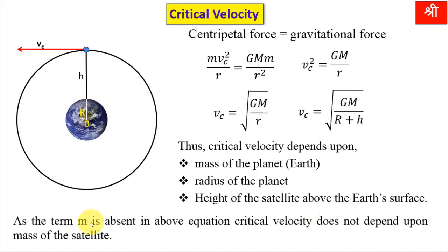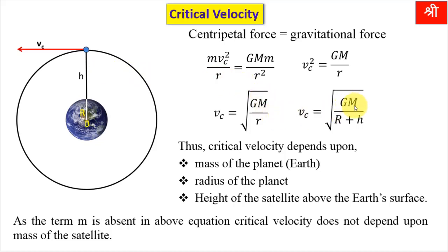Since the term small m is absent in the above equation, critical velocity does not depend upon the mass of the satellite. Critical velocity will be the same for a 100 kg satellite and a 200 kg satellite, because the term small m, mass of the satellite, is absent in this equation.